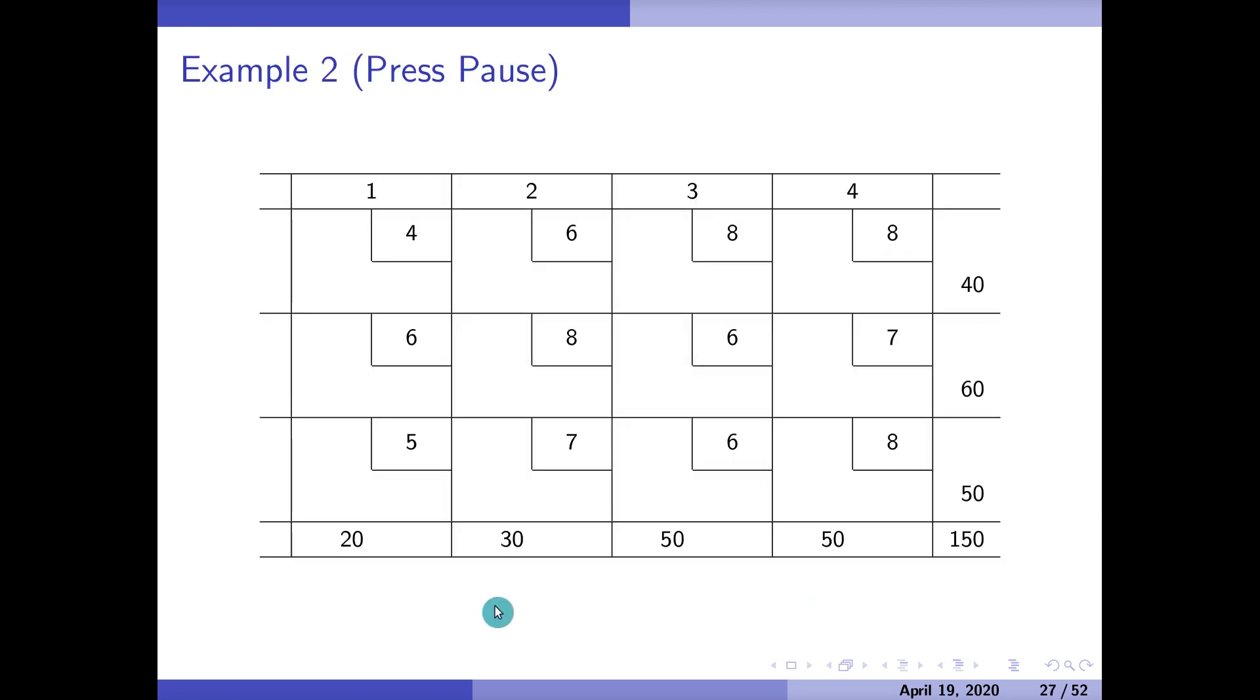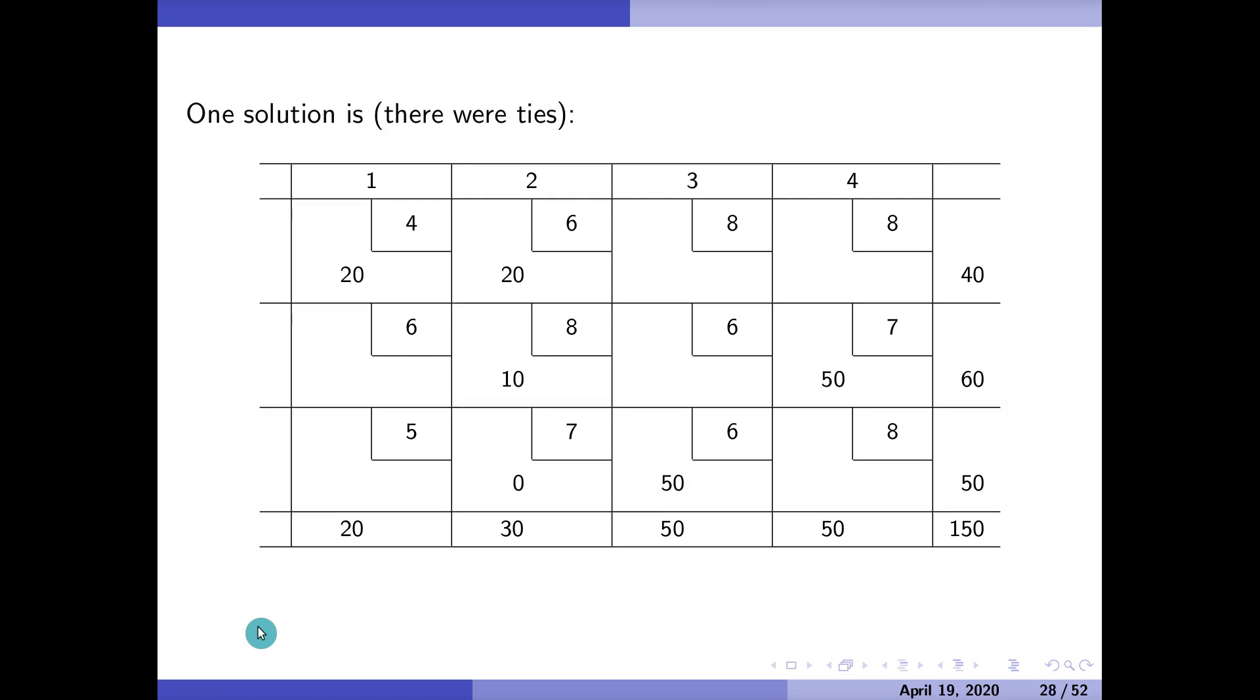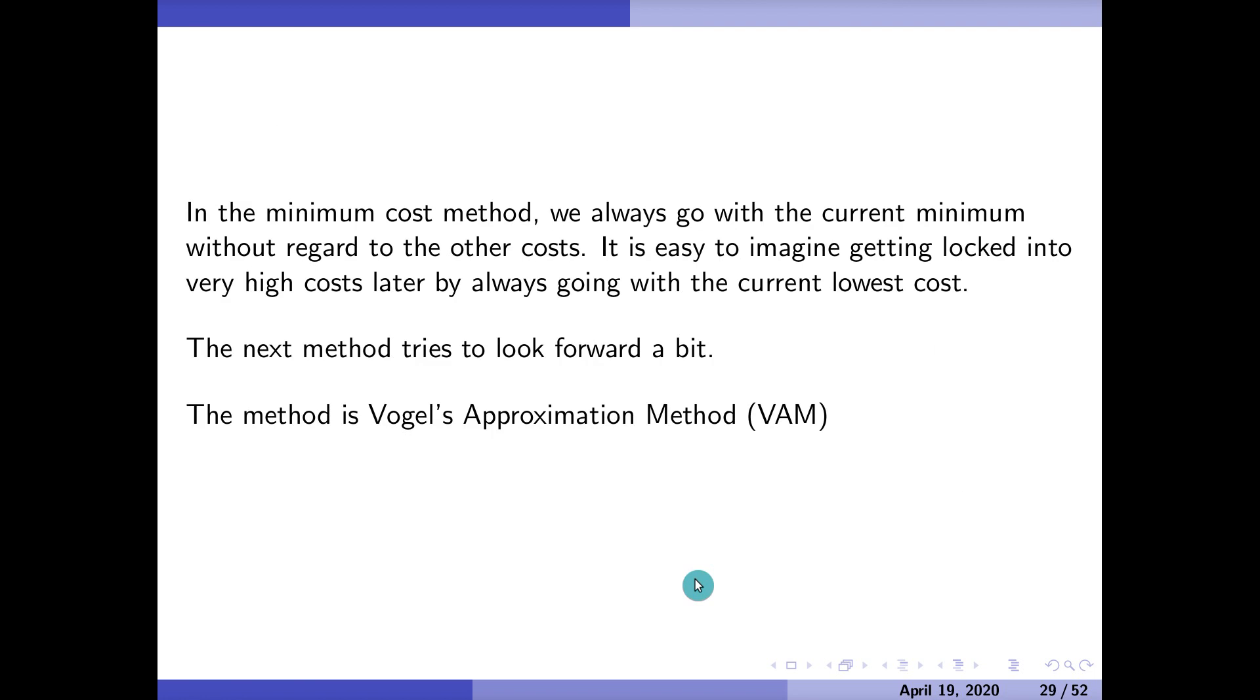So now it's your turn. Here's another example. Give the minimum cost method a try. Remember, you're always going for the minimum cost. Max out those cells. I'm going to go ahead and pause the video here and answer the question, and I will continue. We're going to... There were a couple of ties. In this case, I'm just going to write down the answer here that I got. 20, 20, 10, 50, 50. And then I ended up having to put a zero somewhere. So if you have questions about that, come by and see me. Because we got to get to our third method.